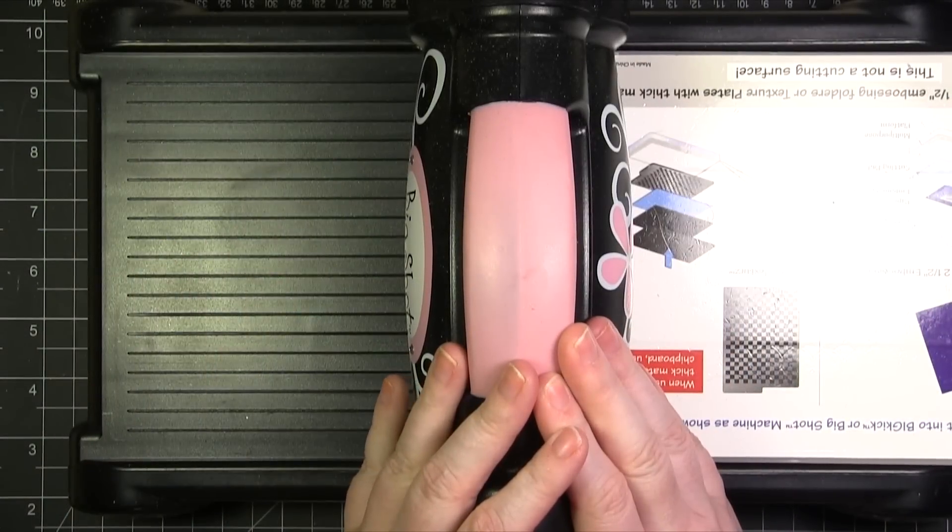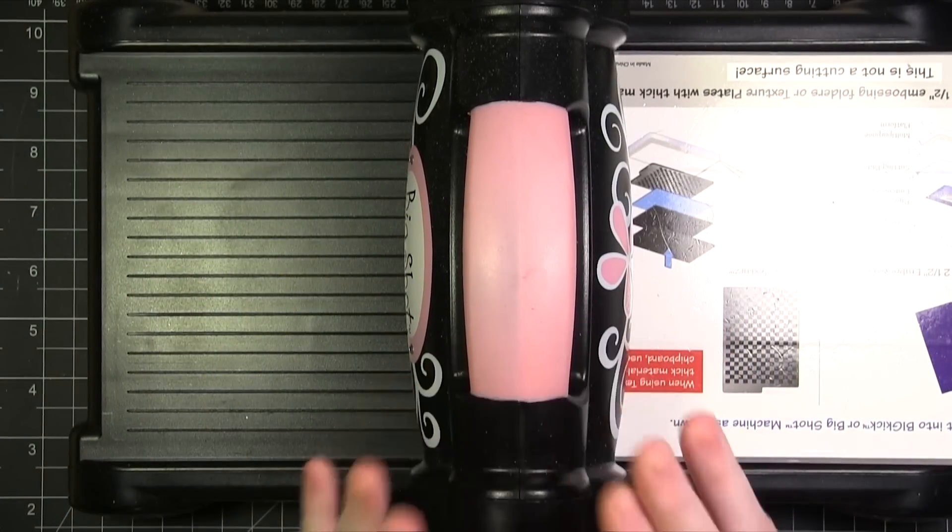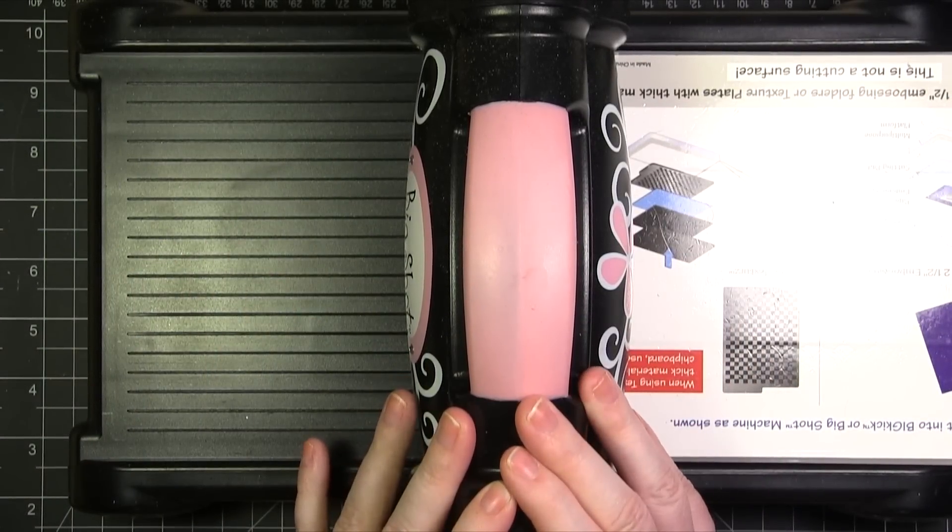Hi everyone. Welcome to another quick tip video for SimonSysStamp.com. Today I'm going to be showing you partial embossing and die cutting.